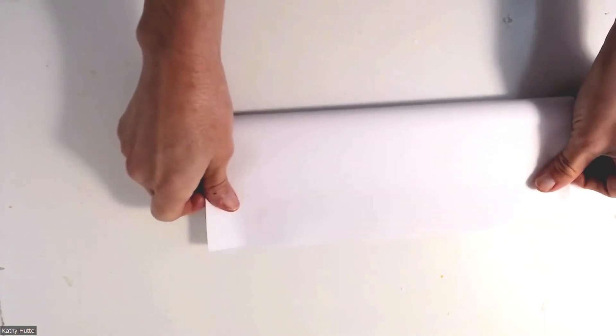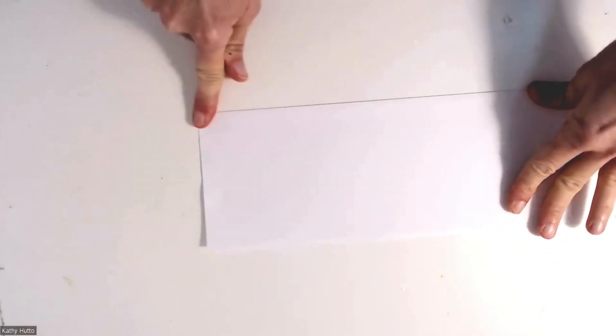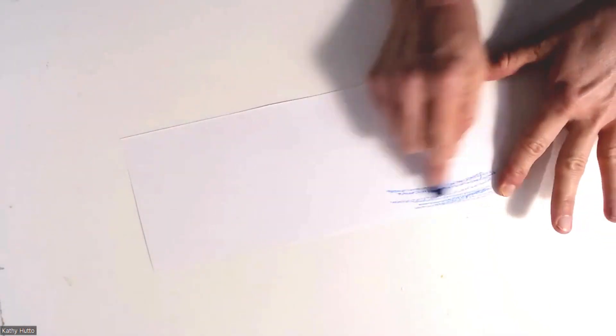So the first thing that you do is just take a piece of paper and fold it in half. And you're going to give each child this half sheet of paper, and you're going to allow them to color it. They can color it however they'd like to.